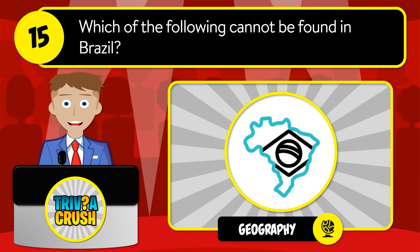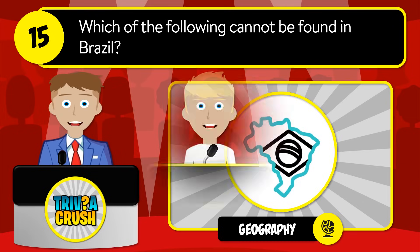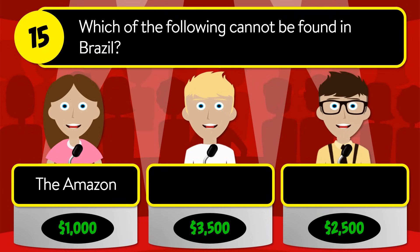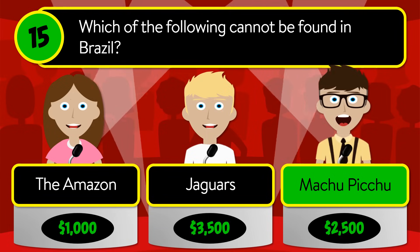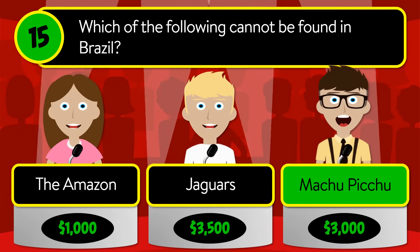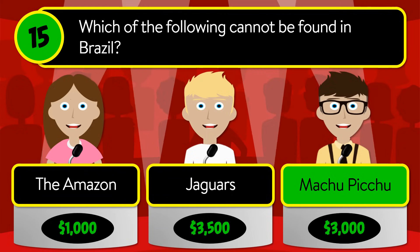Question number fifteen: which of the following cannot be found in Brazil? Is it the Amazon, jaguars, or Machu Picchu? The correct answer is Machu Picchu.